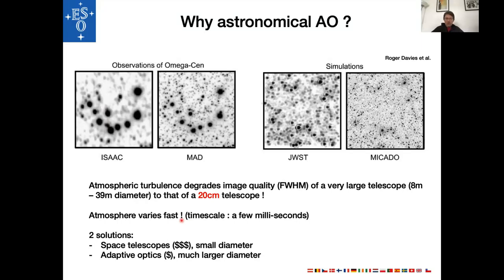One key point: the atmosphere varies fast — the timescale is a few milliseconds — so whatever we do, we need to do it fast. There are two solutions to increasing the resolution of ground-based telescopes: send them to space, which has quite a lot of constraints — JWST being one example — or use adaptive optics. That is why the next generation of ground-based telescopes will be so heavily adaptive-optics oriented.